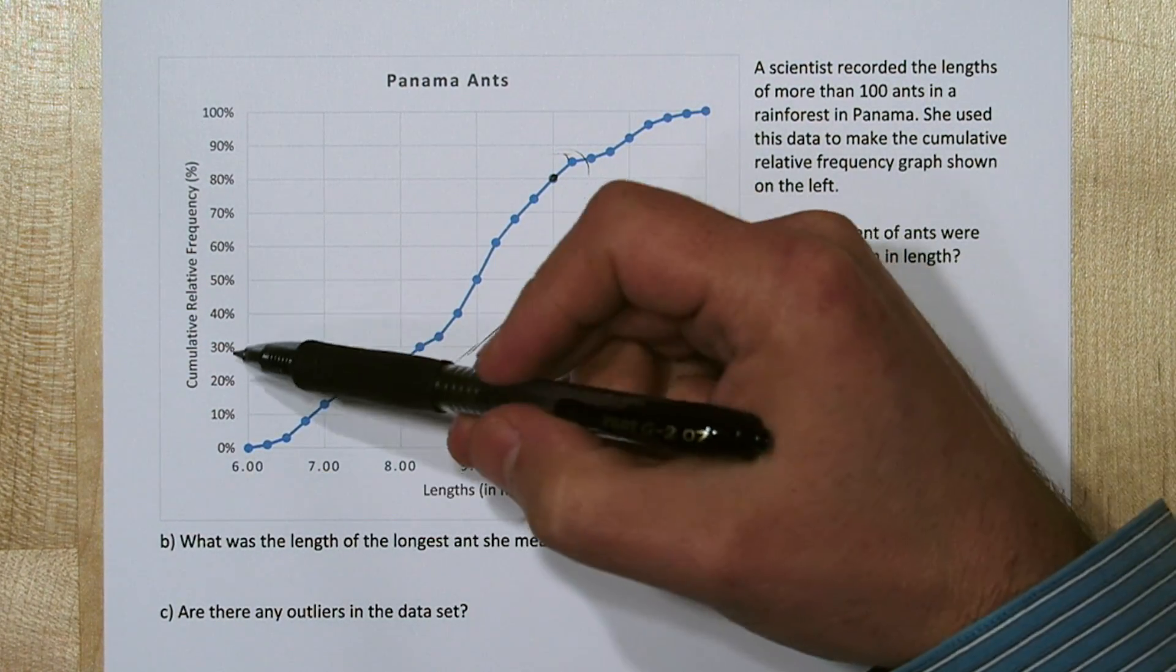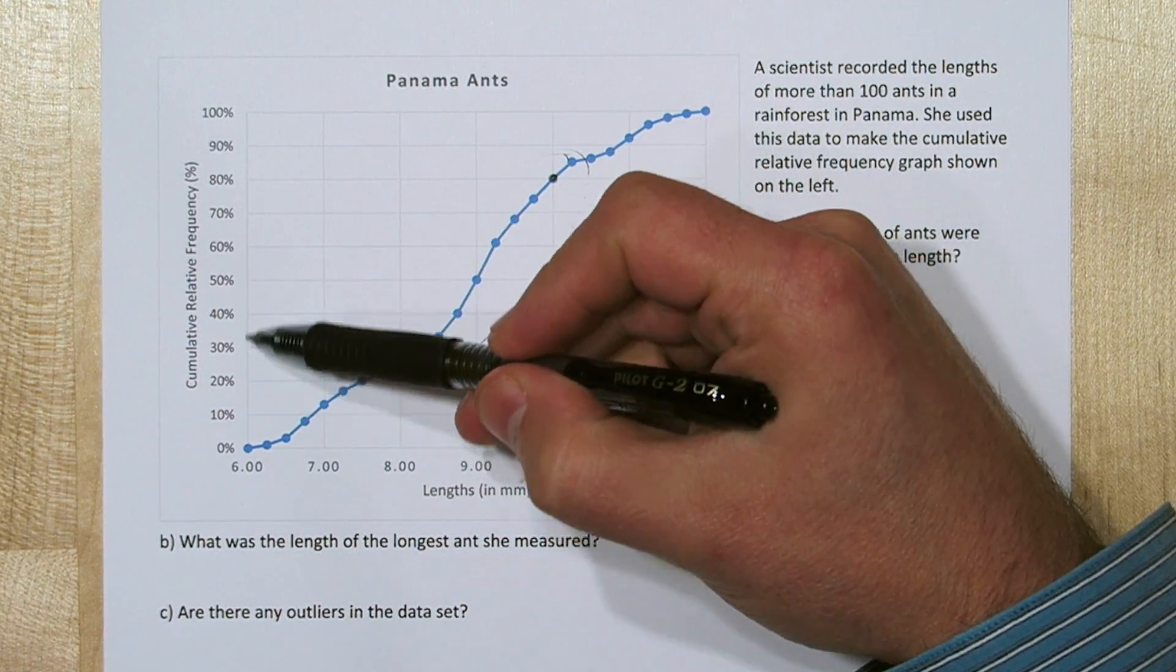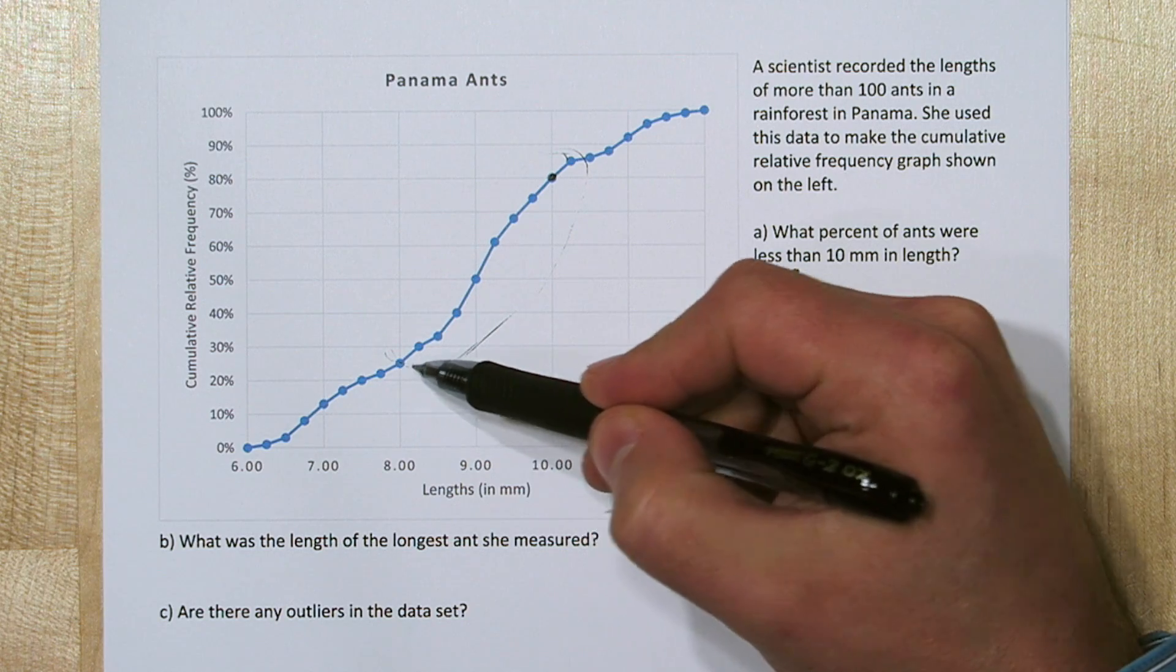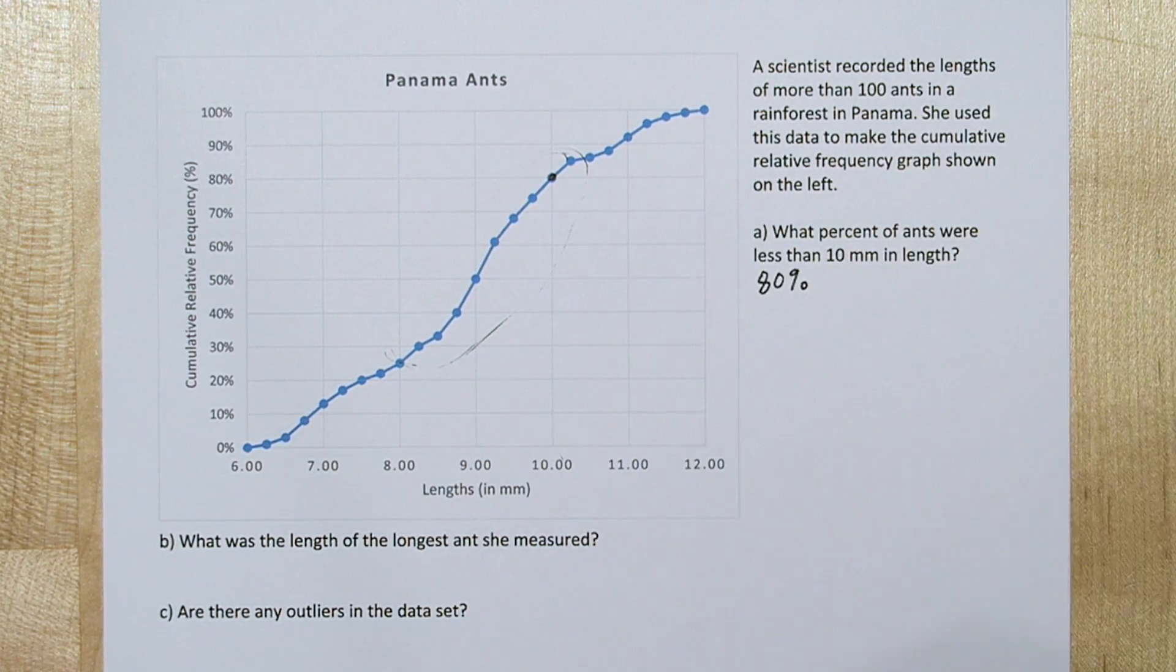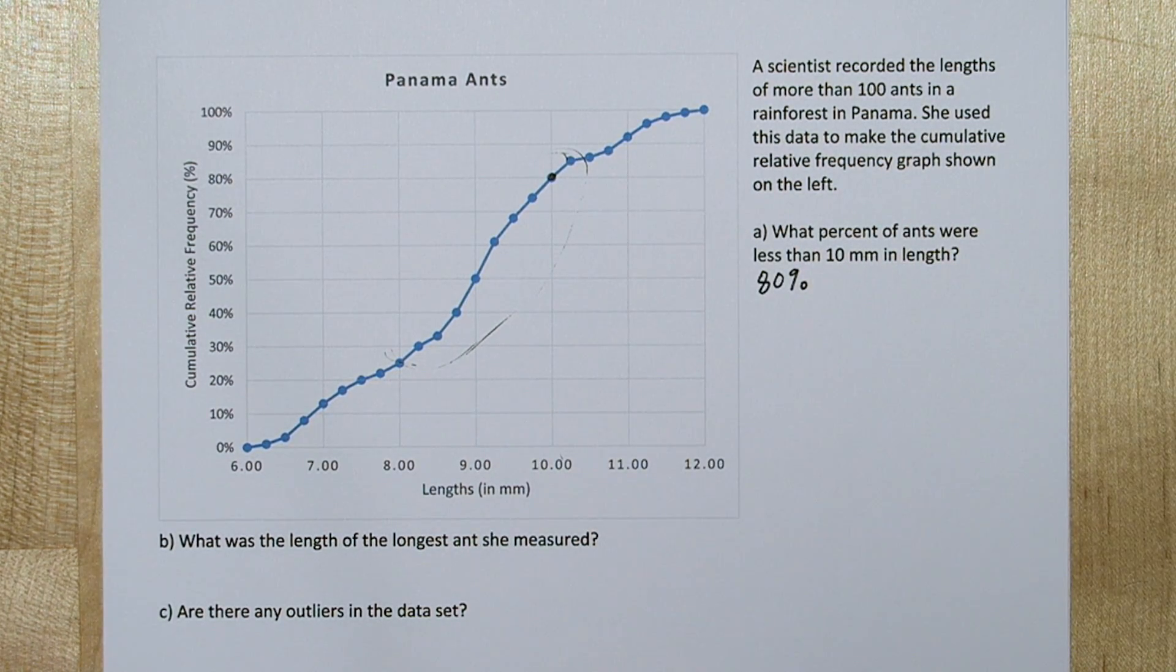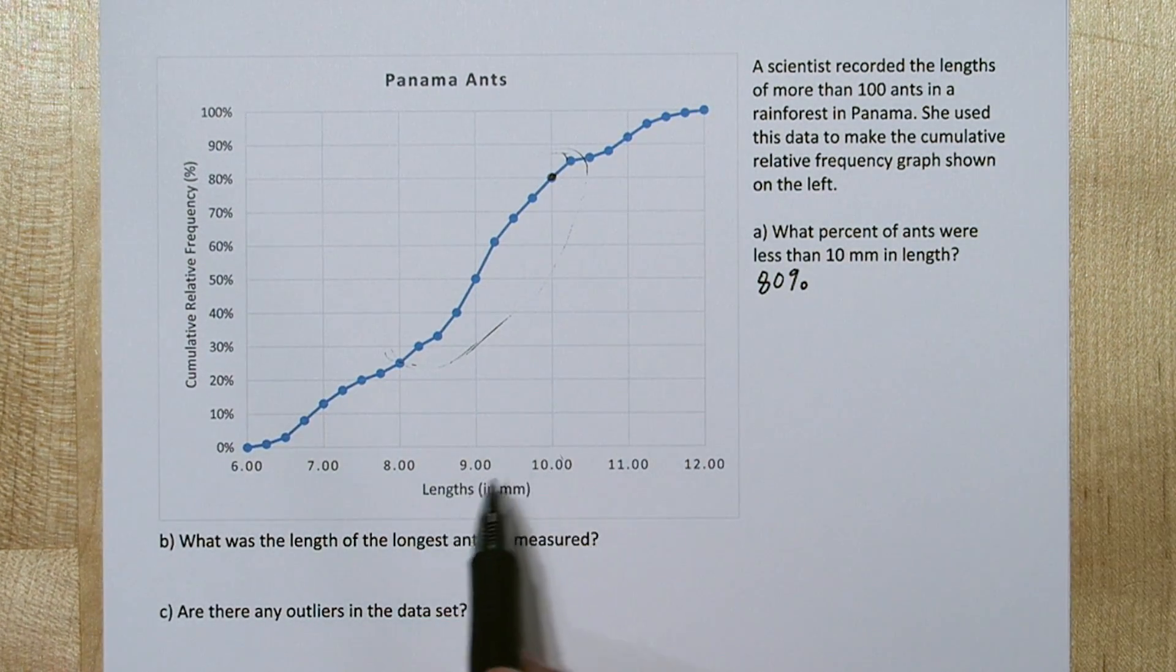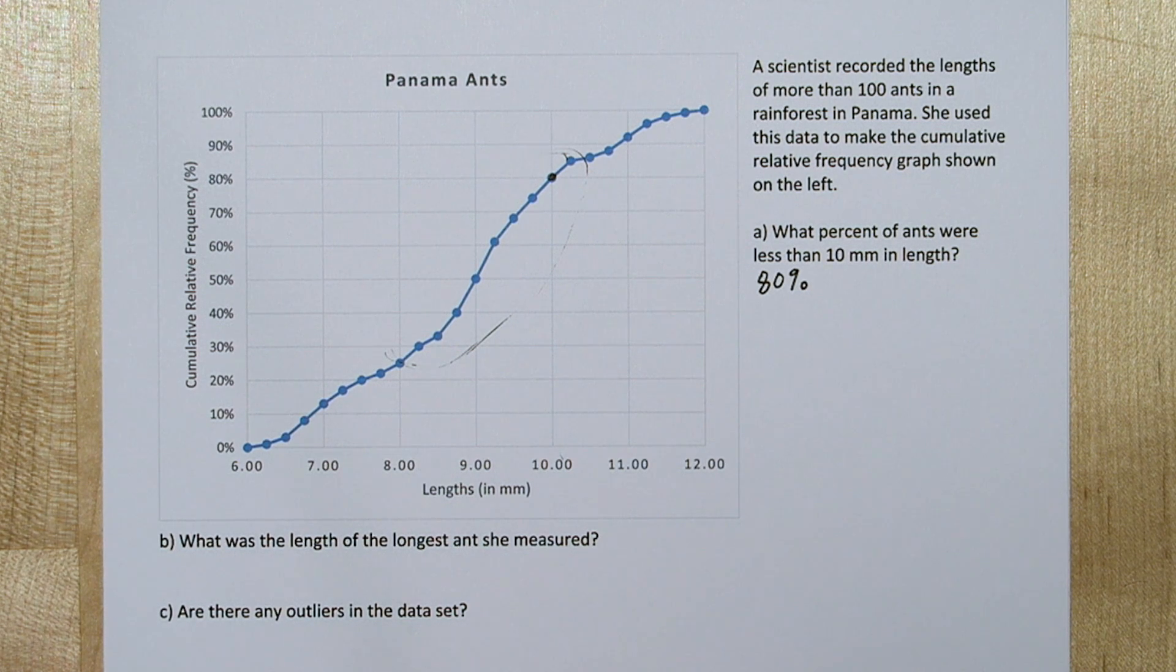We know this because they contributed a lot to the cumulative relative frequency. In fact, about 55% of the ants were between 8 and 10 millimeters. So a steep slope means lots of contribution to the cumulative relative frequency at those particular ant lengths.